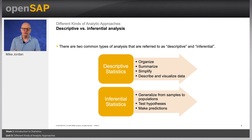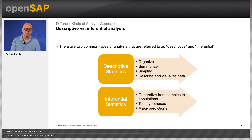There are two common types of analysis that are referred to as descriptive and inferential. Descriptive analysis informs you about the basic qualities of the data. It includes basic descriptive statistics such as the range, minimum value, maximum value and frequency.